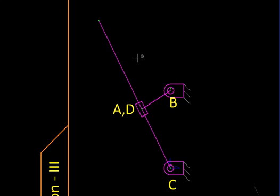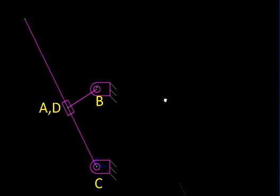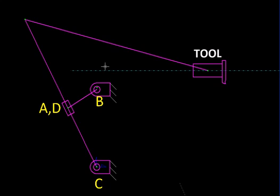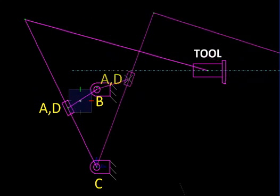Next we are going to make this mechanism a little more useful by adding a few links like this. Here we have added a link, and at the end of it we have fixed a tool which is constrained to reciprocate along this horizontal path. Now as the mechanism moves, the tool goes back and forth, so it reciprocates.